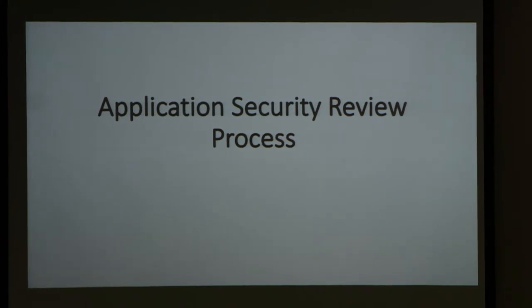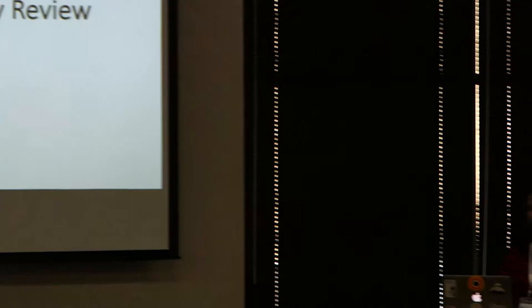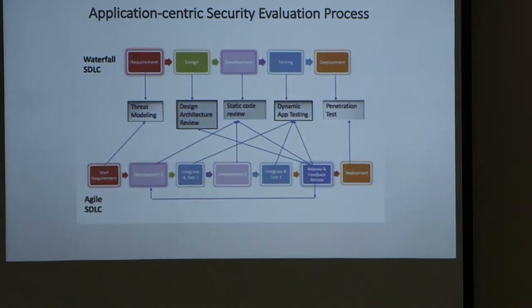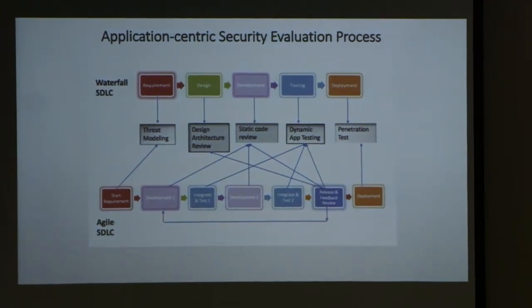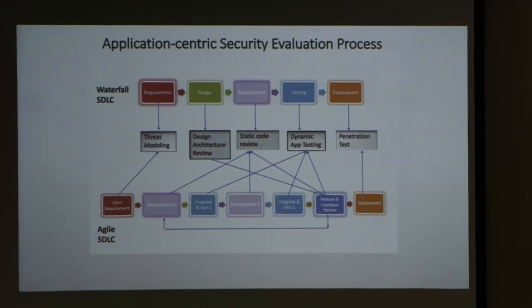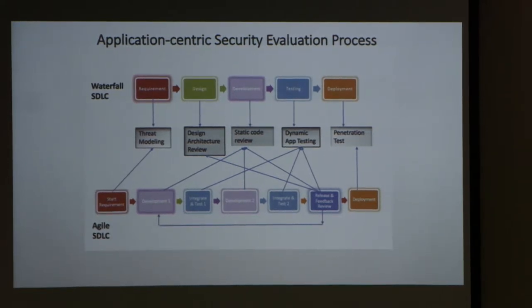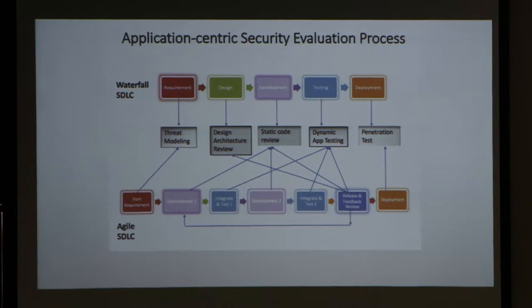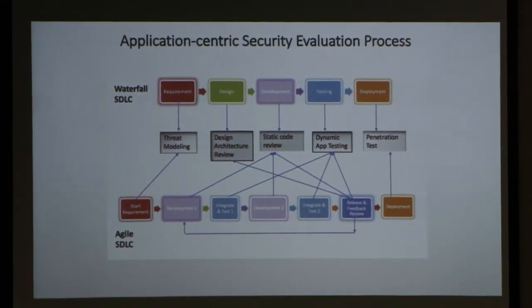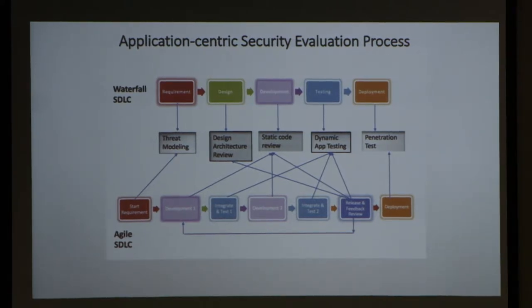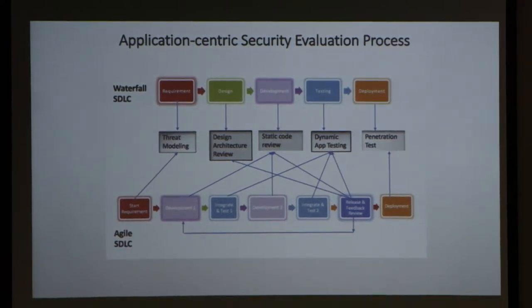Before talking about how we should review libraries, let me quickly go through the application security review process. Irrespective of the SDLC model, we do design and architecture review, breaking down all the components in the full stack. Then threat modeling — coming up with all sorts of threat scenarios. Then static code analysis, followed by manual code review if we have time. If not, we rely on static code analysis tools — and we all know the high false positive rate and the challenges there. I haven't come across a single static code analysis tool that is really efficient at finding bugs.